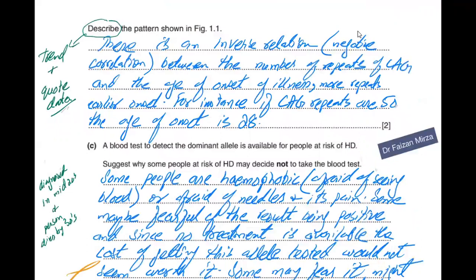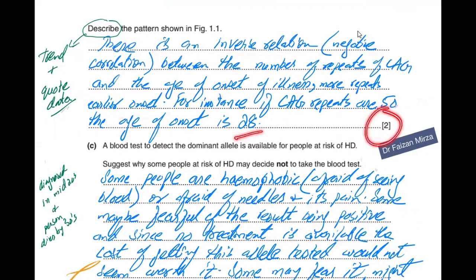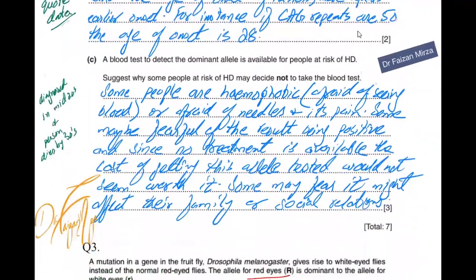The question asks us to describe the pattern shown in figure 1.1. Whenever we use the word 'describe', we give the trend and quote the data. So there is an inverse relation — a negative correlation — between the number of repeats of CAG and the age of onset of illness. More repeats lead to early onset. For instance, if CAG repeats are 50, then the age of onset would be 28. We get two marks here by mentioning the description.